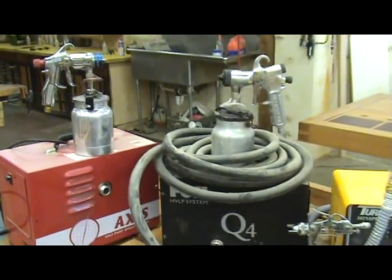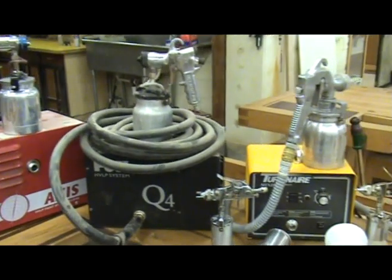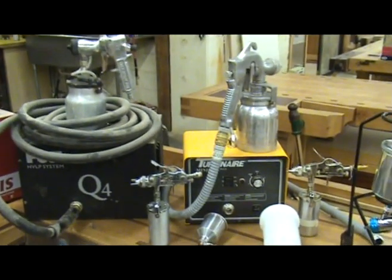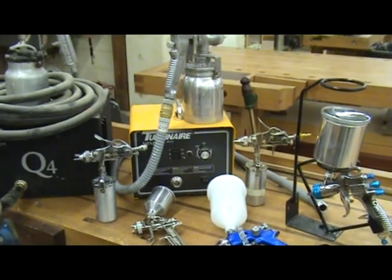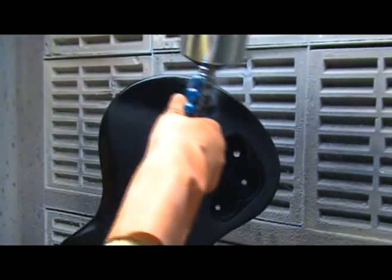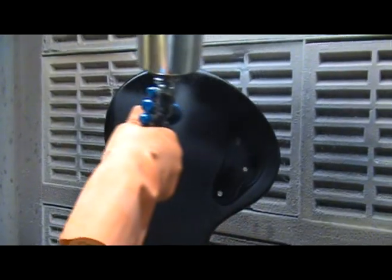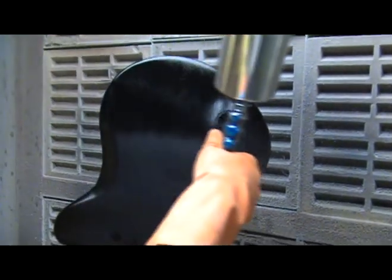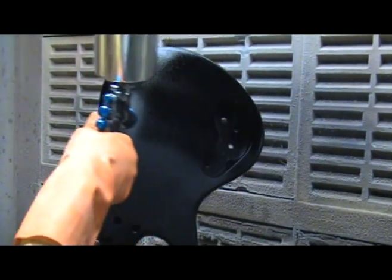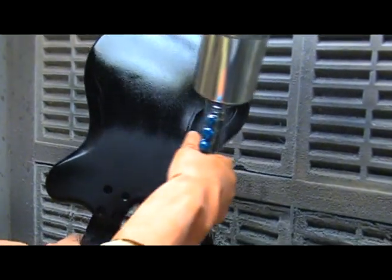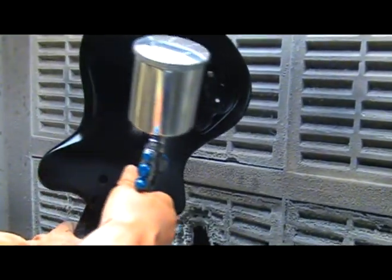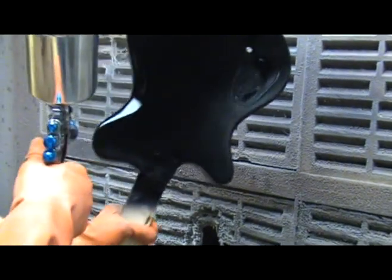There is a wide variety of spray systems available today for the hobbyist to the professional, but they all work on the same principle. The liquid product is atomized into tiny drops as it is mixed with pressurized air. The spray gun determines how the liquid is atomized and directs the mixture onto the surface where it flows back together to make a continuous film.